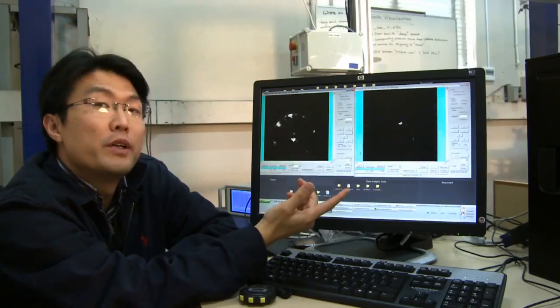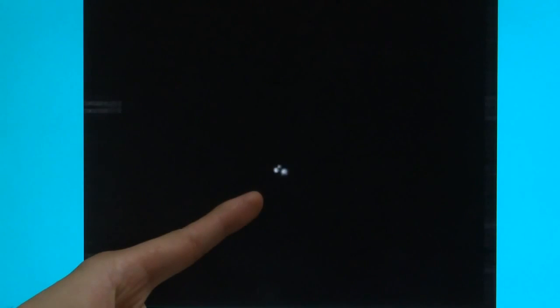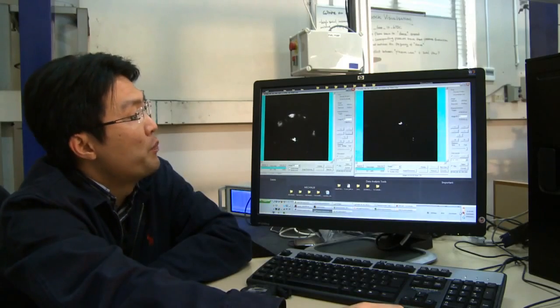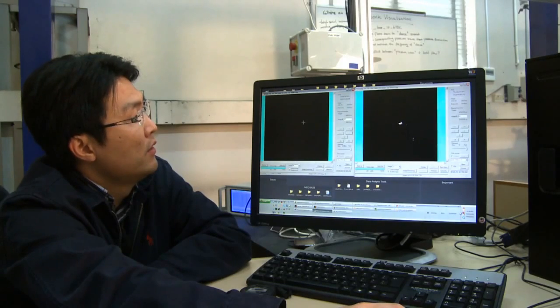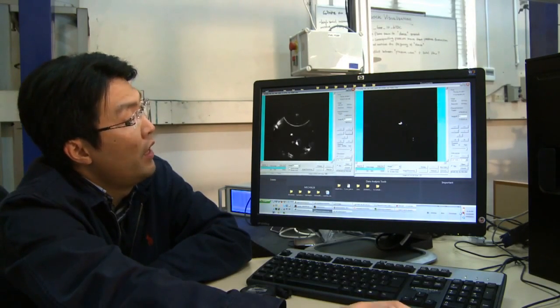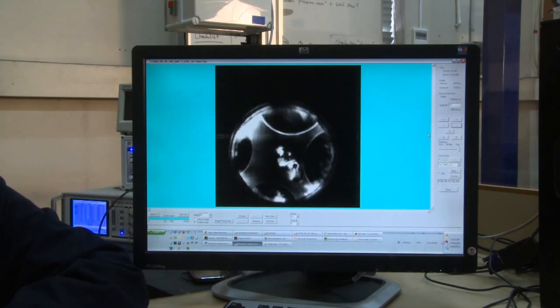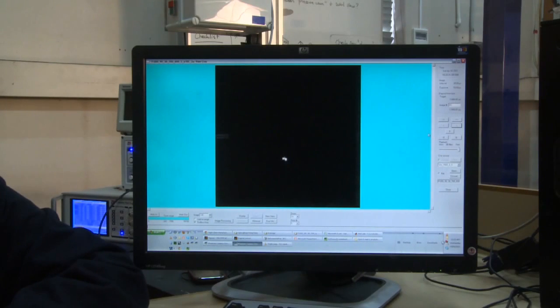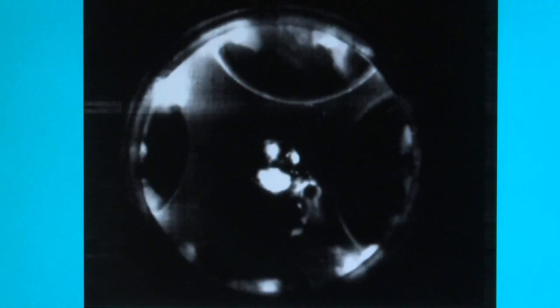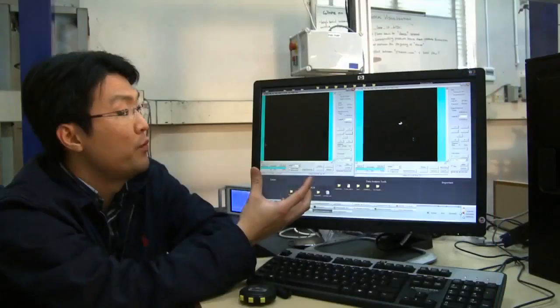This is the high speed movie that we have taken using the optically accessible engine and also high speed camera. And in the background, you can see four valves and fuel injector right at the center. And the brightness that you can see from this movie is from burning fuel. And we can use this image information to understand the emissions formation.